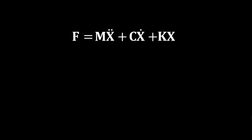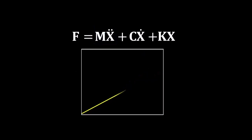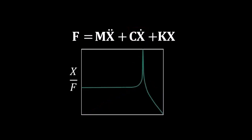If you ever forget which FRFs are related to which values, look at the equation of motion: F = Mẍ + Cẋ + KX. The accelerance plot gives you the mass value because mass is tied to acceleration in the equation of motion. The mobility plot gives you the damping value because damping is tied to velocity. And the receptance plot gives you the stiffness value because stiffness is tied to displacement. These relationships make it easy to remember which FRF to use.